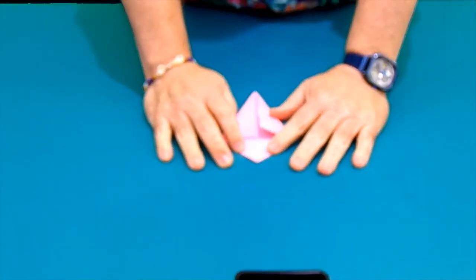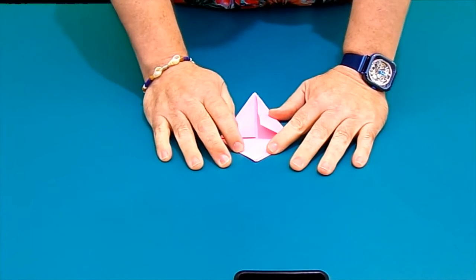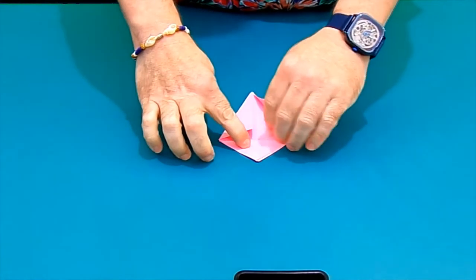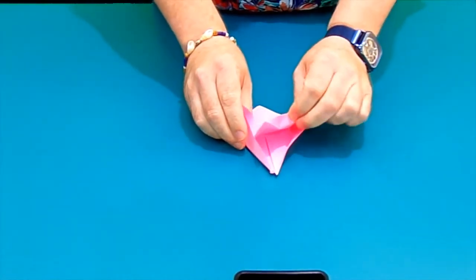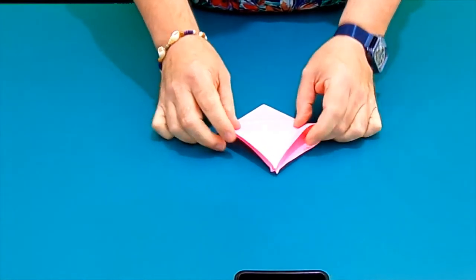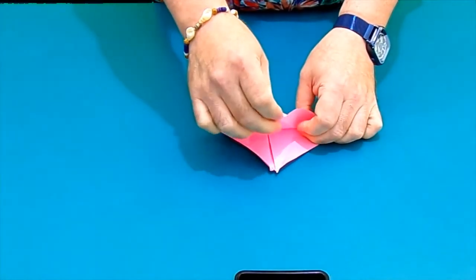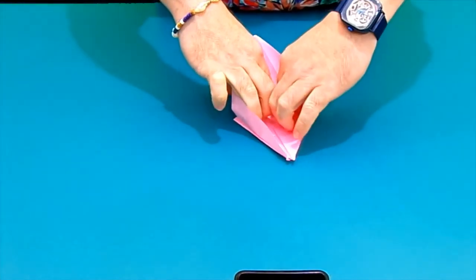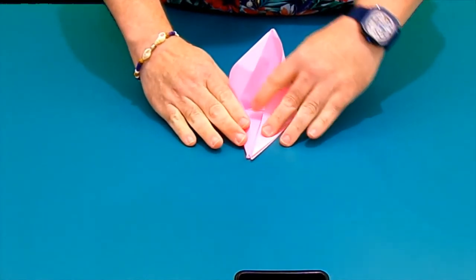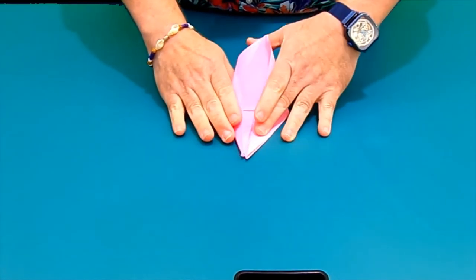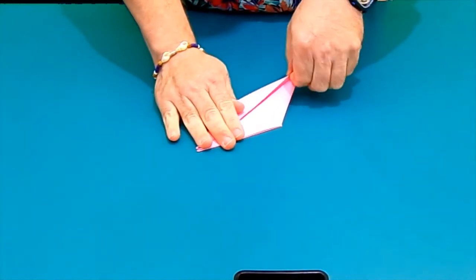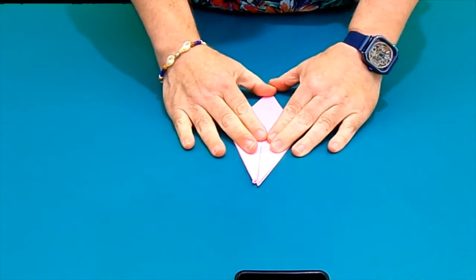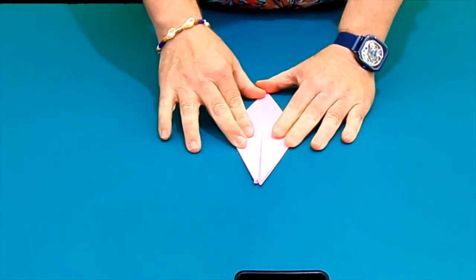The next part some people consider some of the hardest part of the bird base. Because what we're going to do is we're going to take, move, hold these out. Take the only the top layer. Bring it around. Bring it up to the fold at the top. And then we put these to the inside.